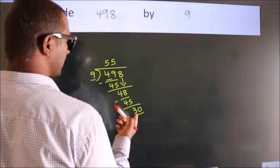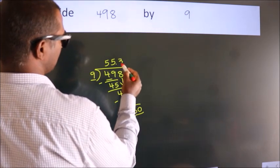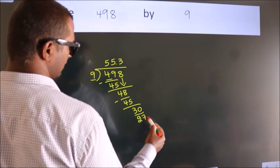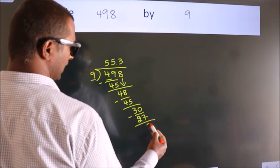A number close to 30 in 9 table is 9 threes, 27. Now we subtract. We get 3.